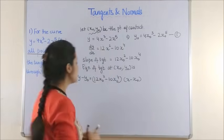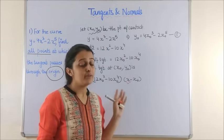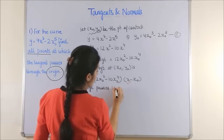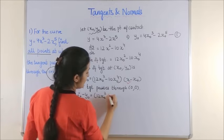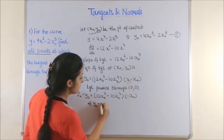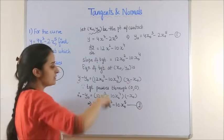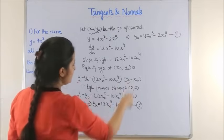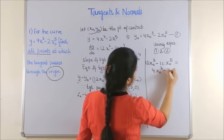Since the tangent passes through the origin, we substitute x = 0, y = 0. The biggest mistake students make is assuming x₀ and y₀ to be 0. Substituting (0, 0): −y₀ = (12x₀² − 10x₀⁴)(−x₀), which implies y₀ = 12x₀³ − 10x₀⁵. Call this equation 2. Please note these derivatives have no meaning until there is a specific point of contact.